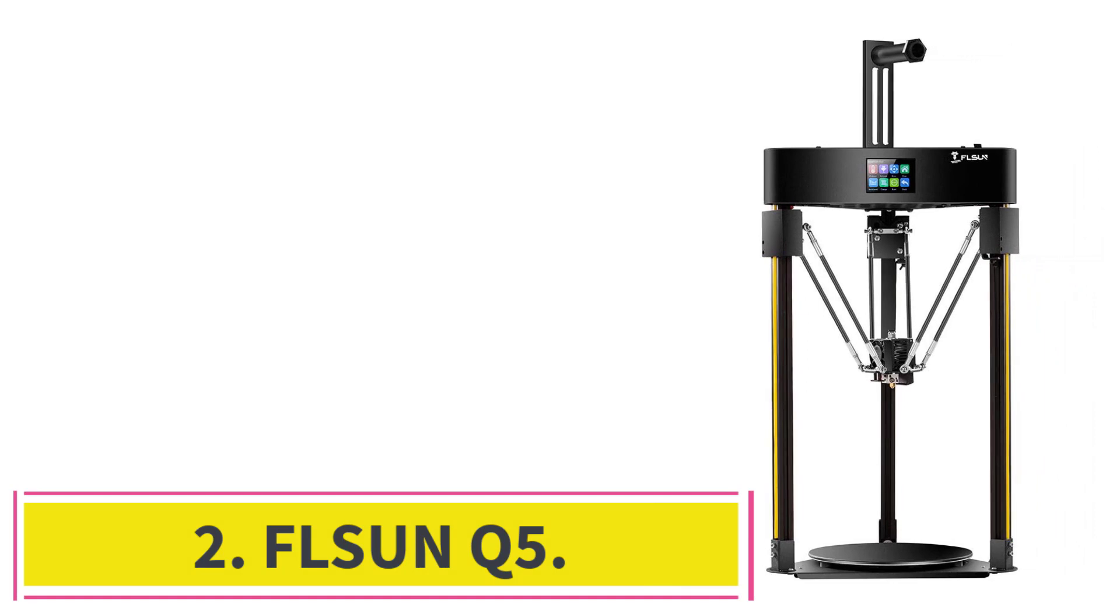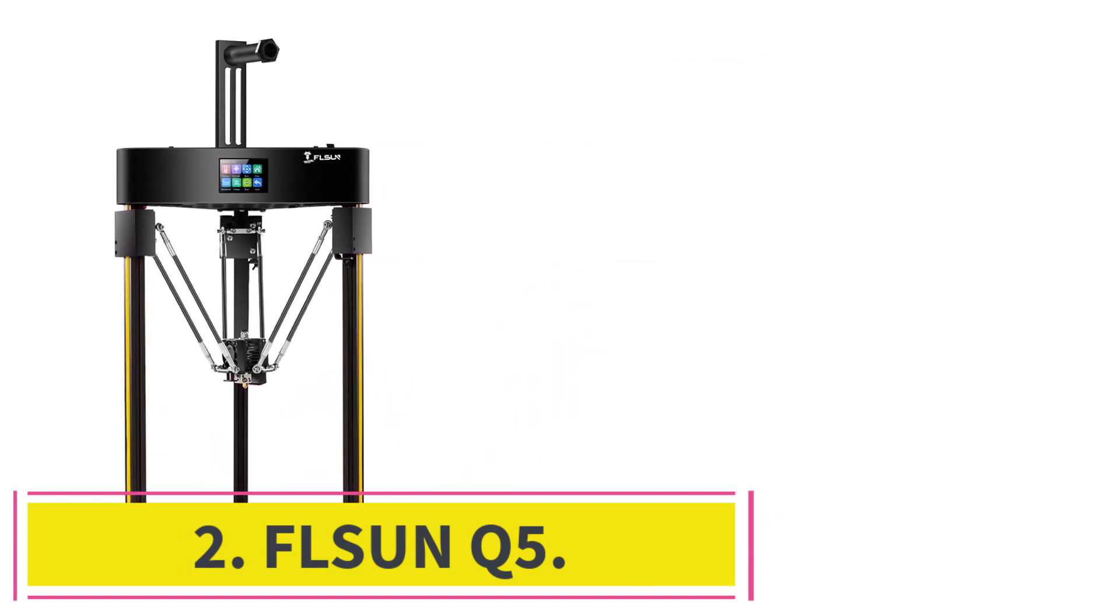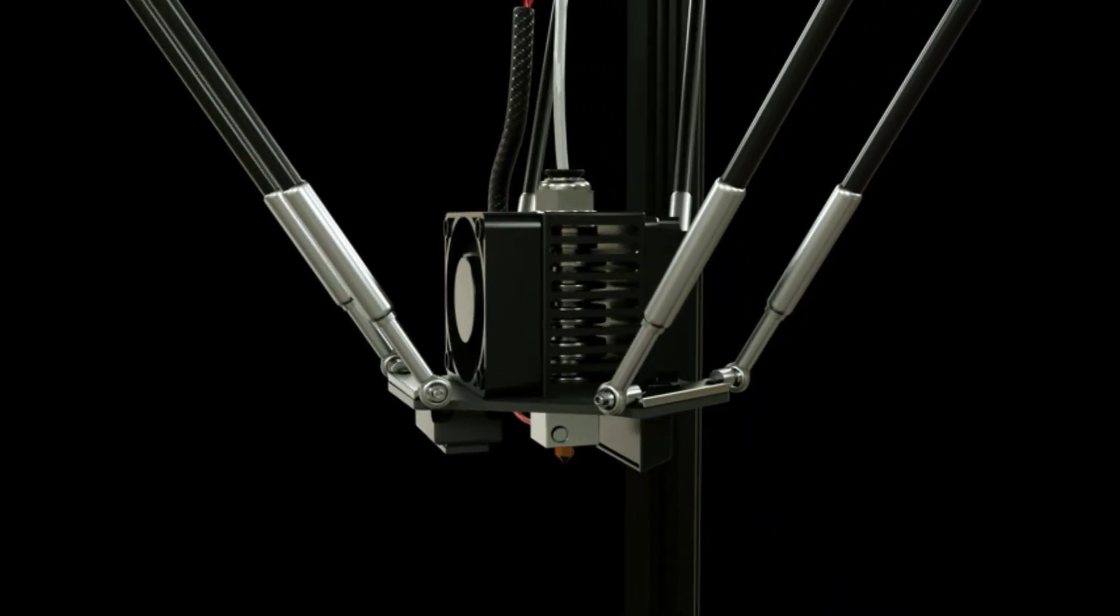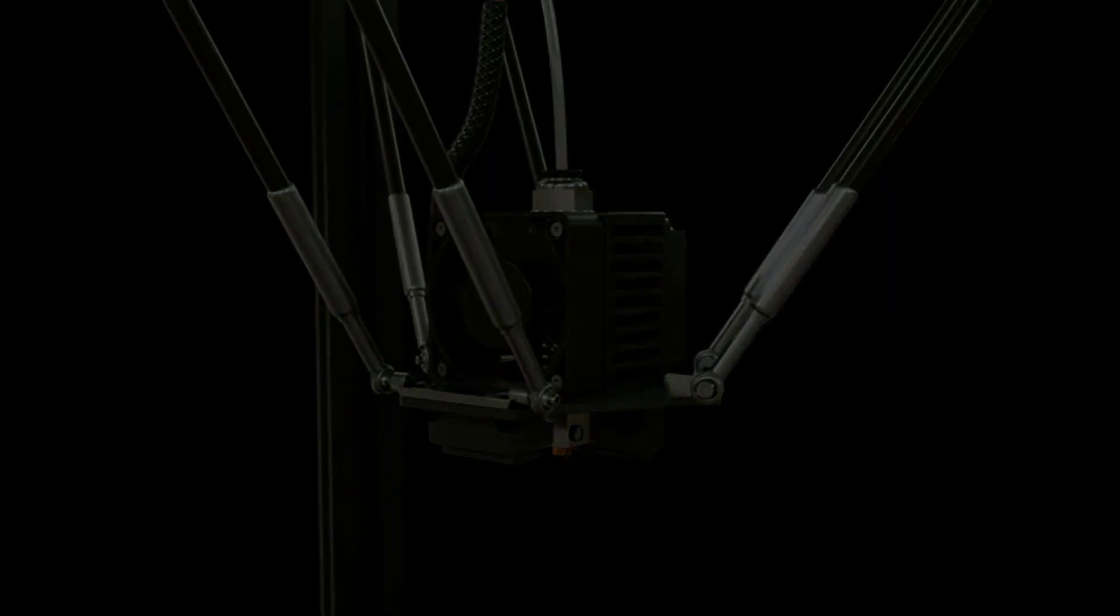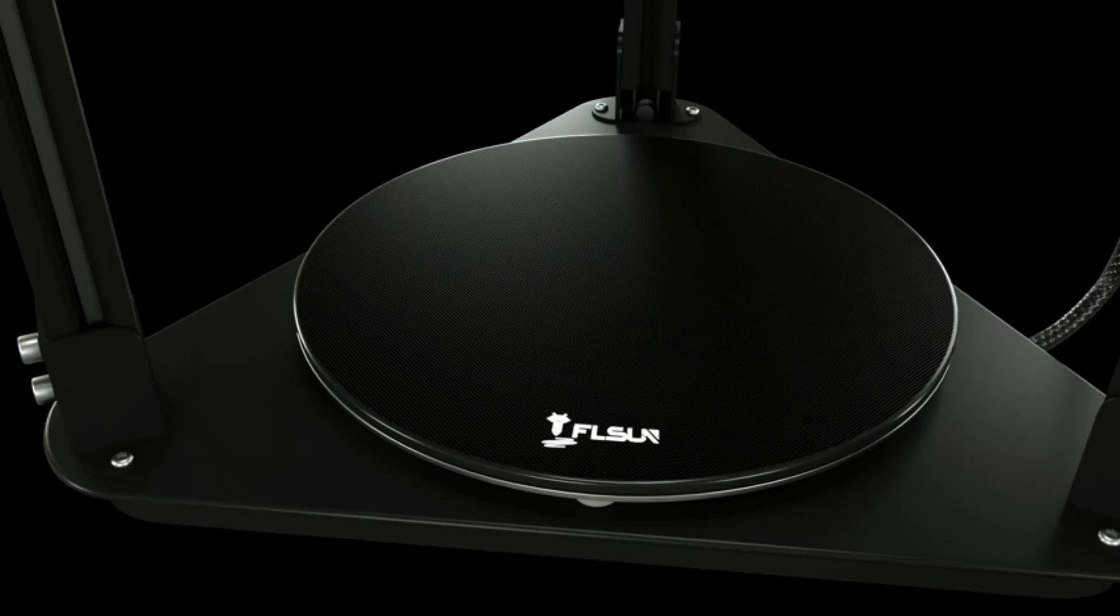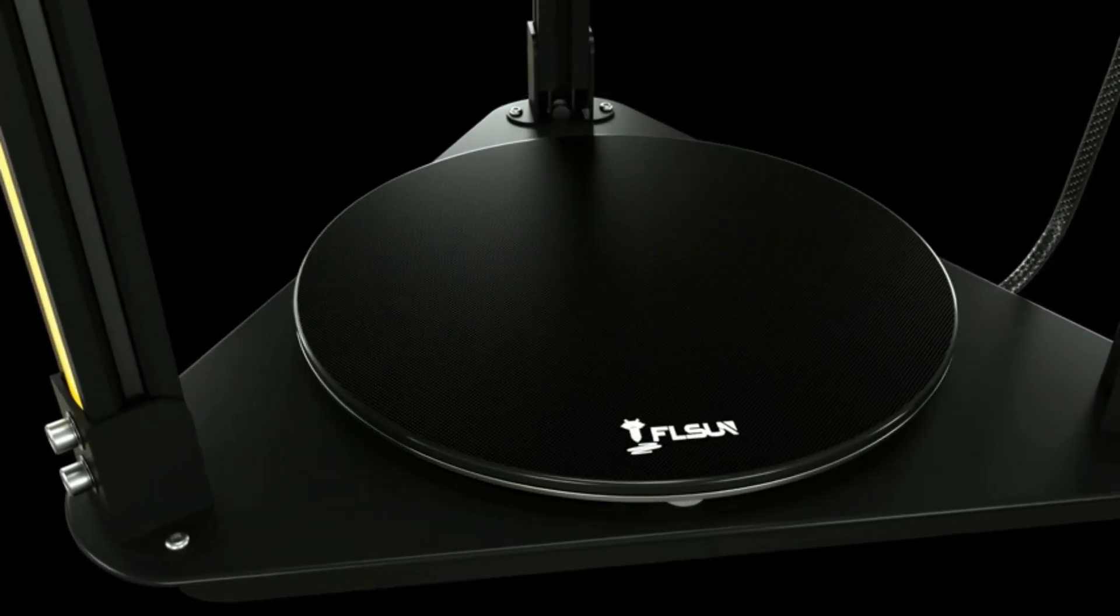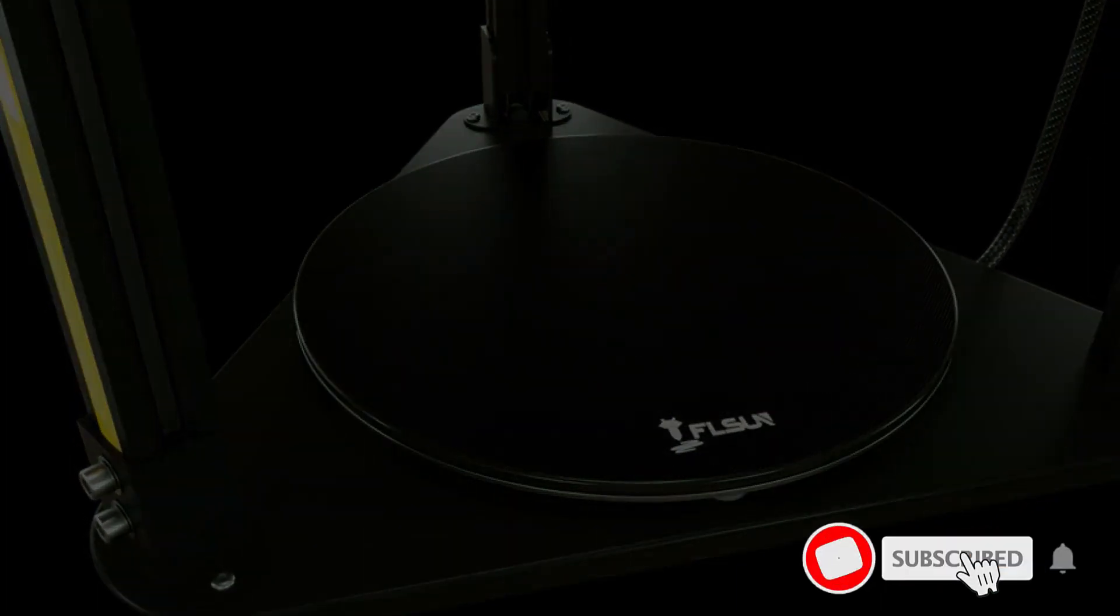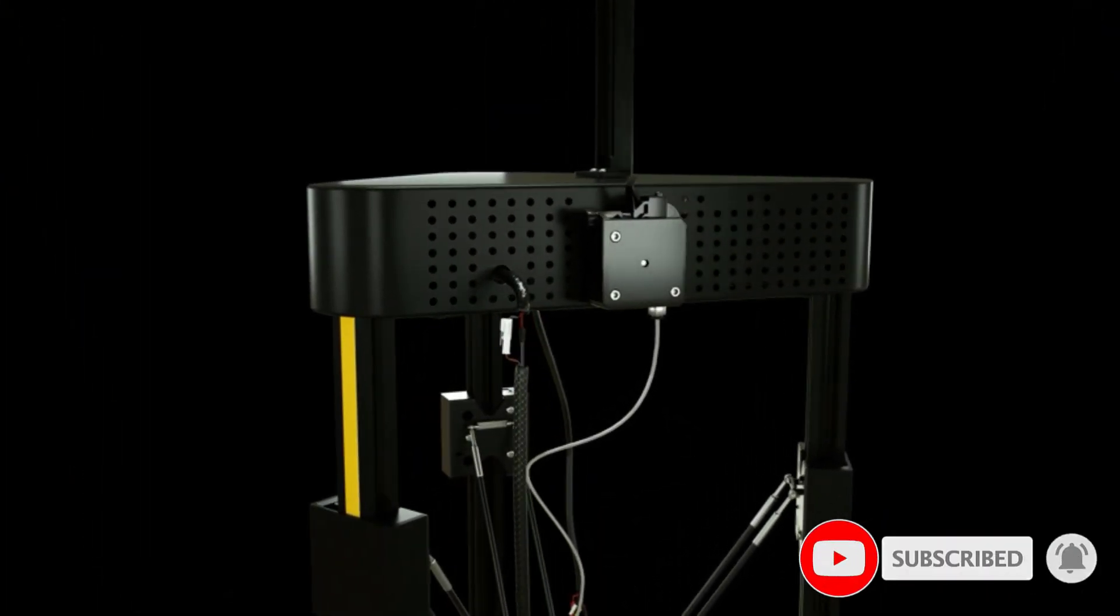At number 2, Fulsun Q5. The Fulsun Q5, why do these 3D printers have such weird names, has a solid construction quality. It is a great budget 3D printer under 300 which is sturdy, which helps keep the machine stable when printing at high speeds. The setup is easy and it takes about 30 minutes to set the whole thing up. You just need to fix a few screws, attach a few wires, and presto, your printer is good to go.